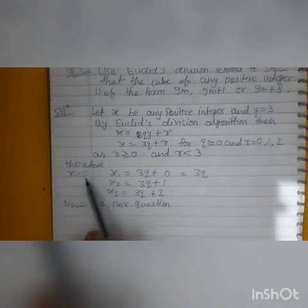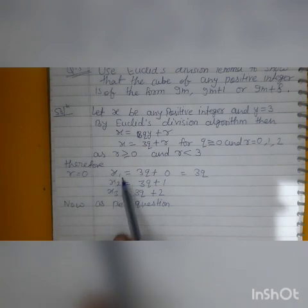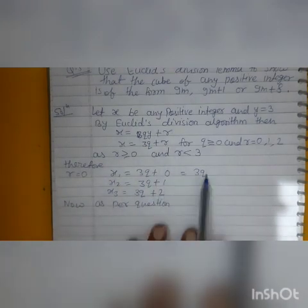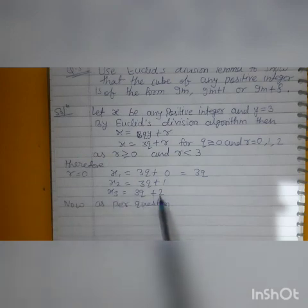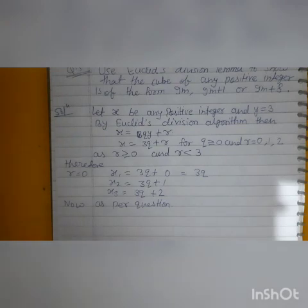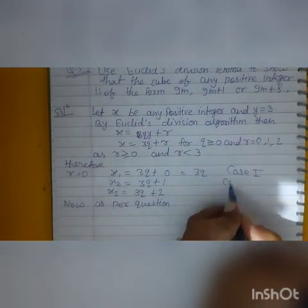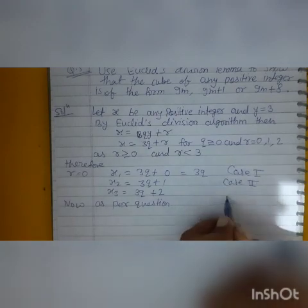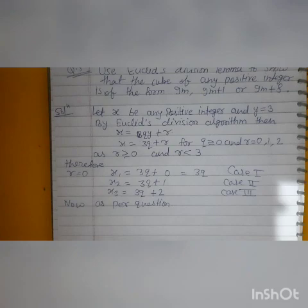Therefore, if r is equal to 0, if you put r is equal to 0, x1 will be 3q plus 0, that is 3q. x2 will be 3q plus 1 and x3 will be 3q plus 2. So in Case 1, Case 2, and Case 3.